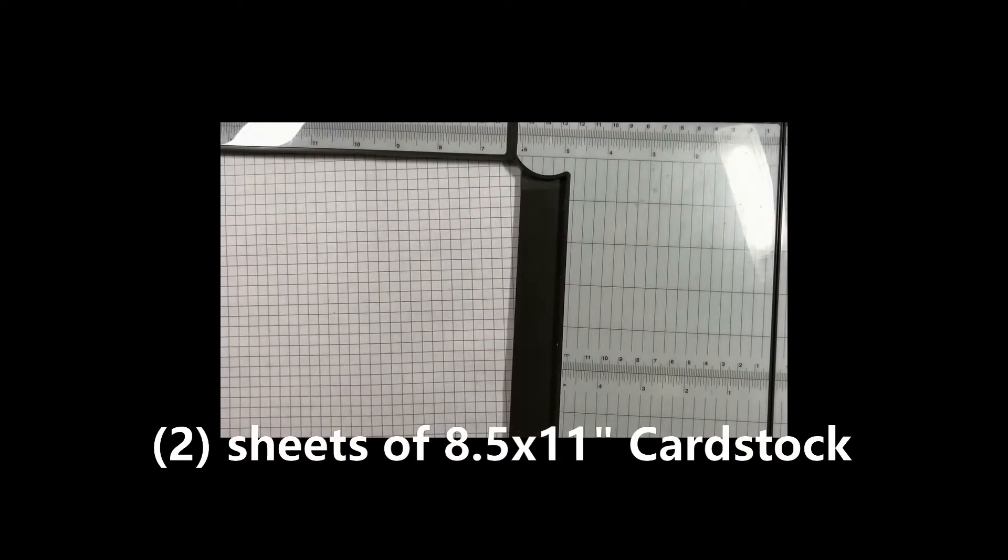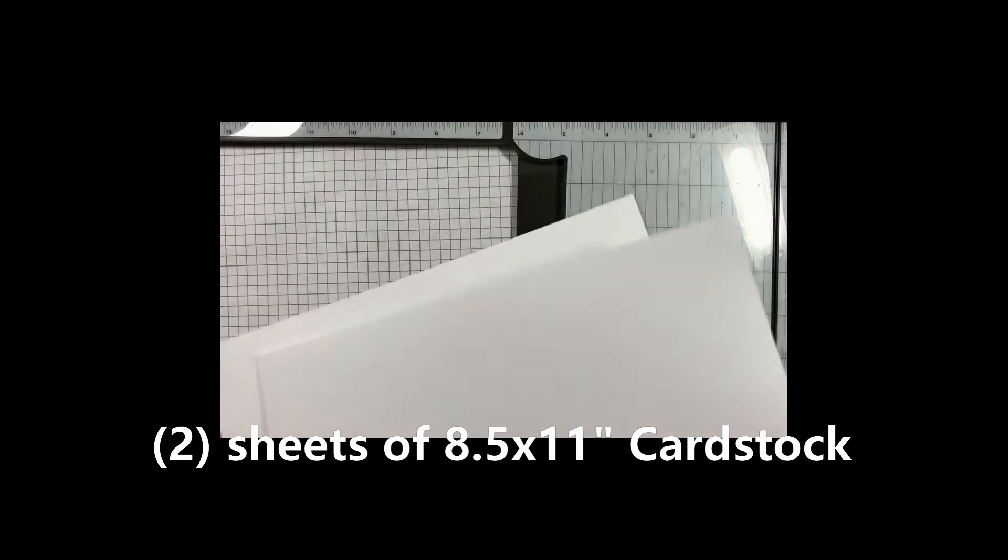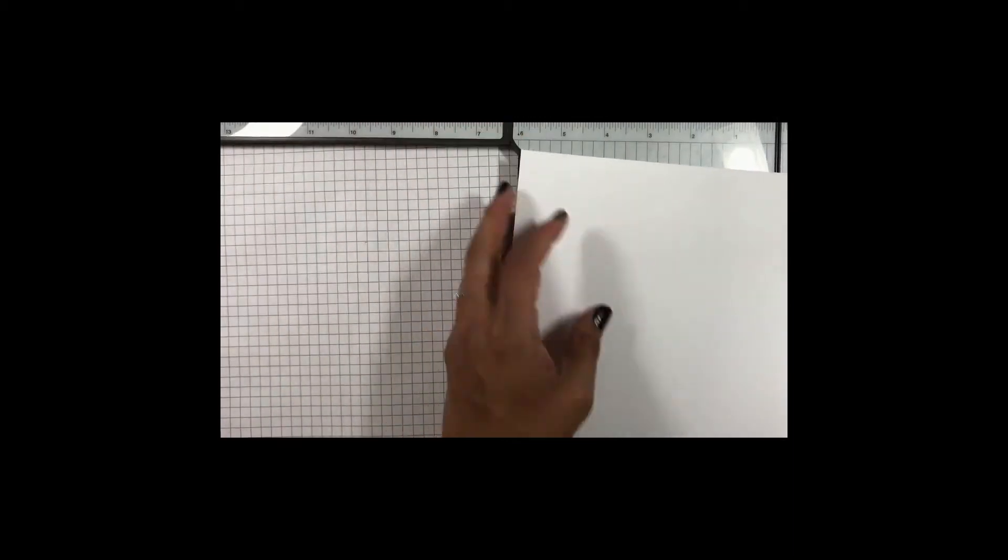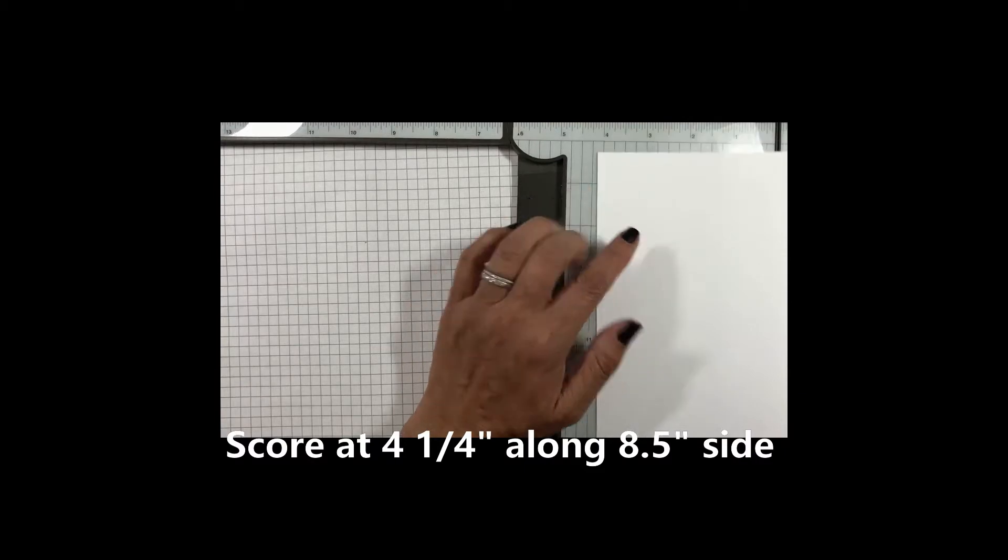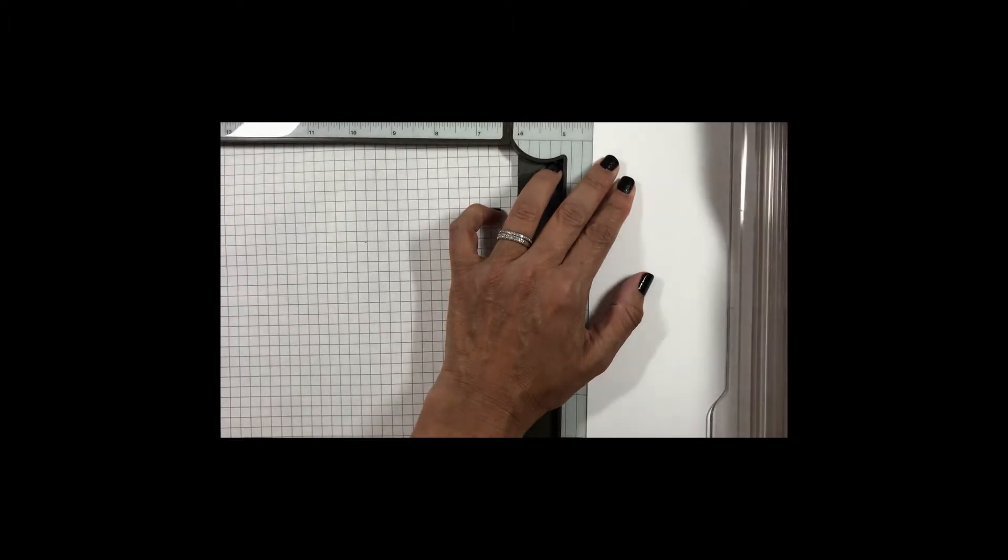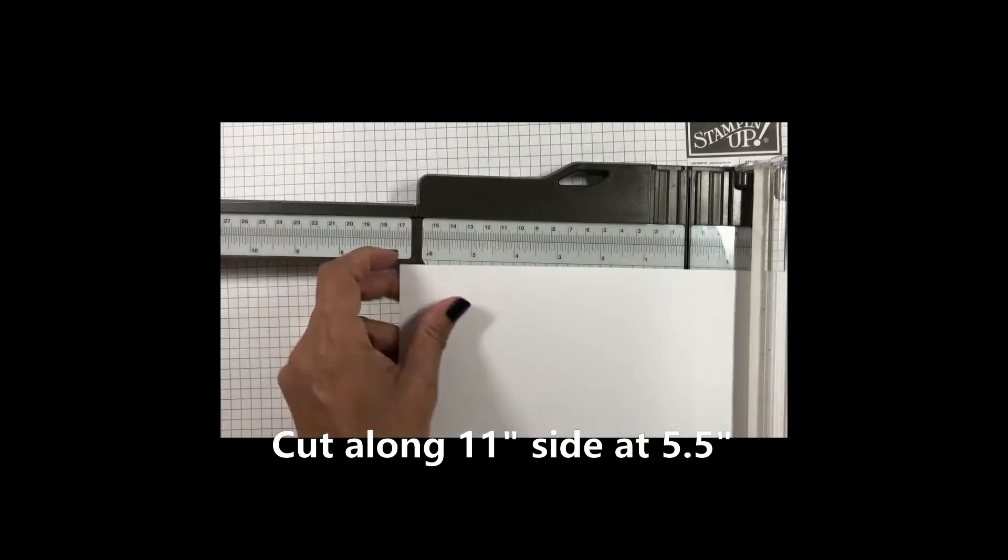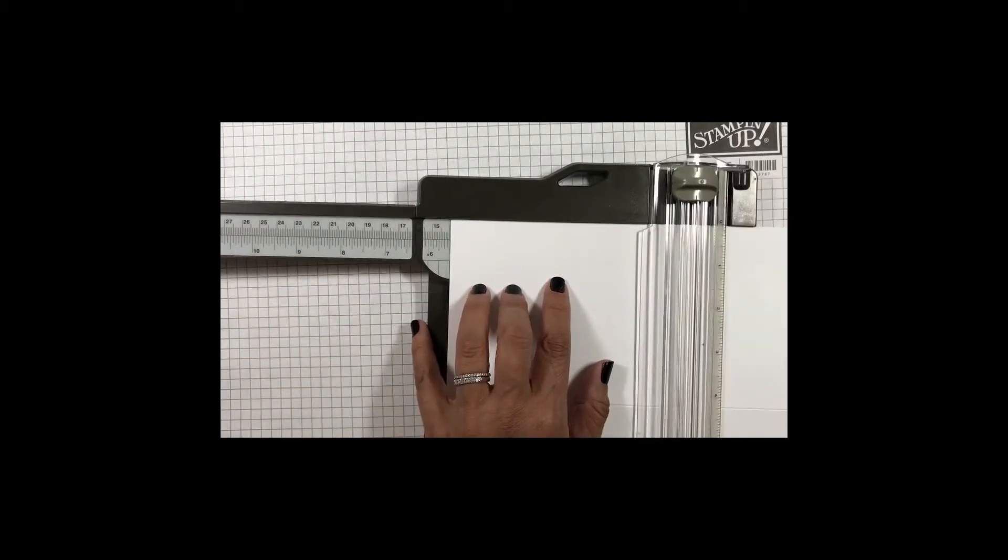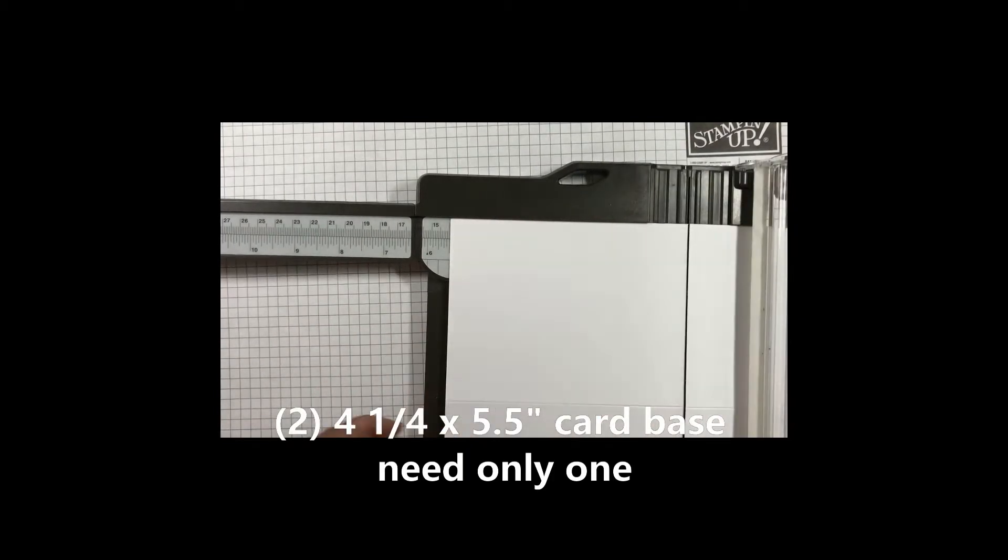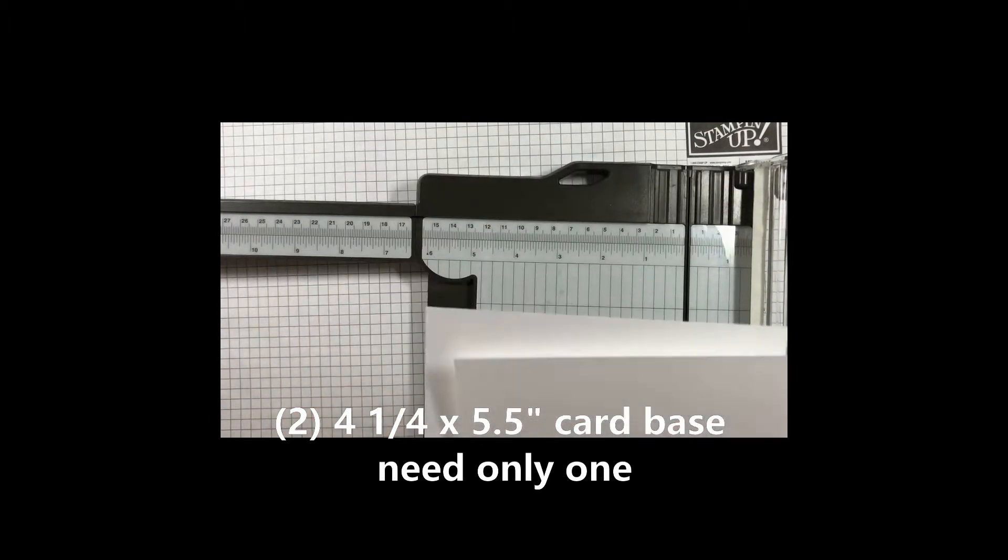You have two sheets of eight and a half by eleven. You need two for this project. For the first sheet this is going to be your card base. You're at the four and one quarter. And I need you to just go here and score. And then I'm going to literally turn it around and cut at five and a half. So now I have two card bases and scored.